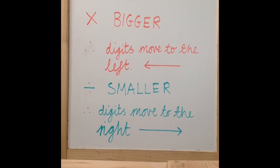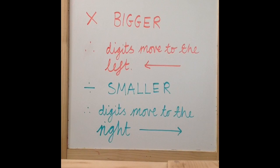If you are multiplying by a number, the number must get bigger. Therefore, the digits move to the left. If you are dividing by a number, the number must get smaller. Therefore, the digits move to the right.